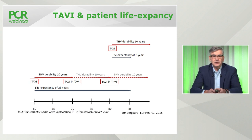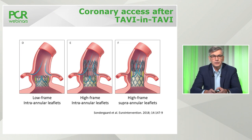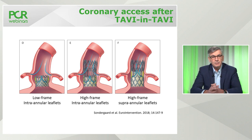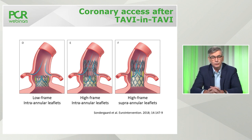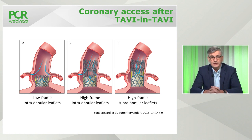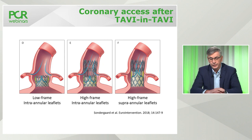When a new TAVI valve is implanted inside an existing one, the leaflets of the first valve are pushed aside, creating a tunnel of tissue. For valves with a high stent frame and supraannular leaflets, this tunnel extends from the LVOT through the sinus of Valsalva to the ST junction. In those patients, it will be very difficult — maybe even impossible — to access the coronary arteries, which can be a major issue in case of acute coronary syndrome.